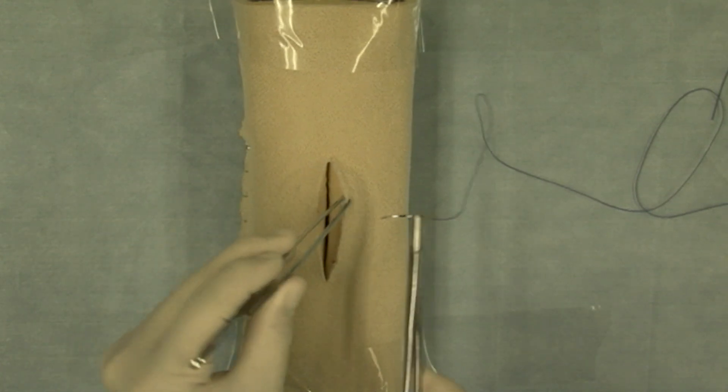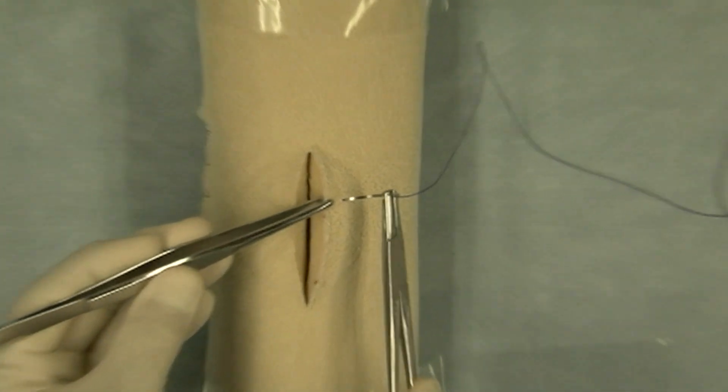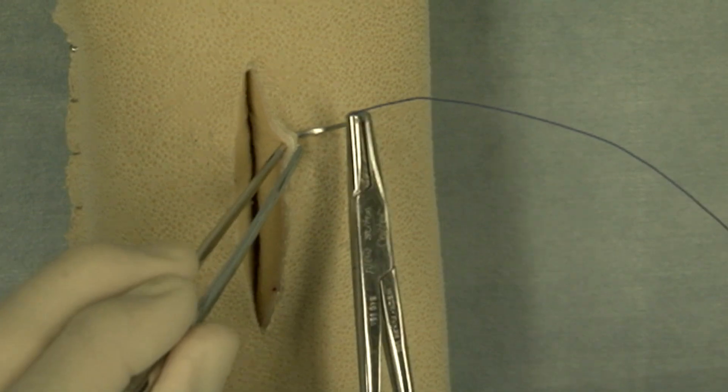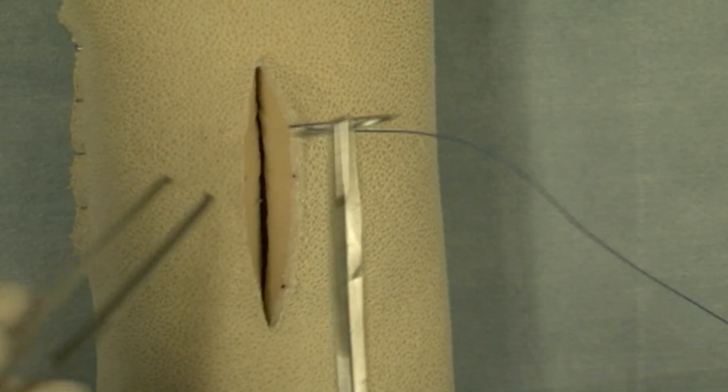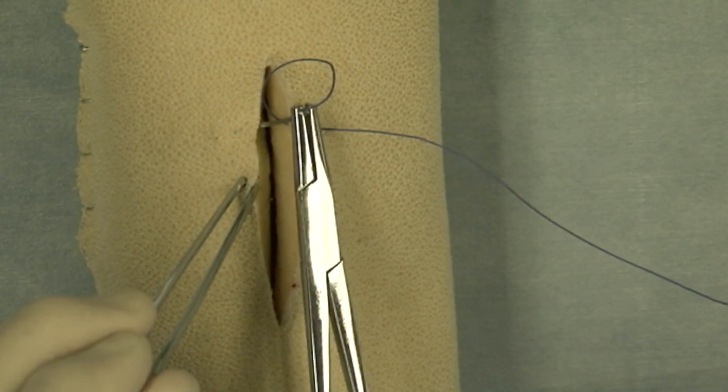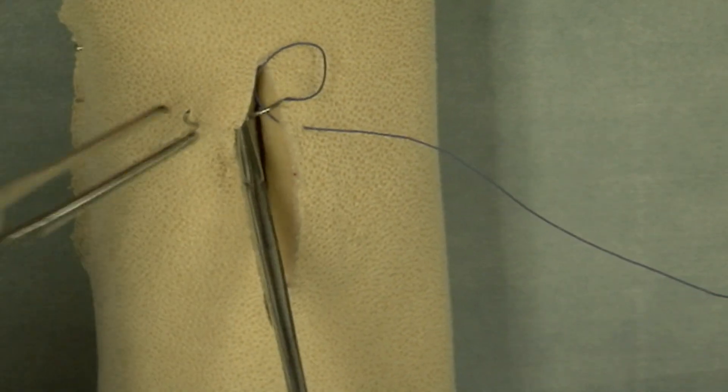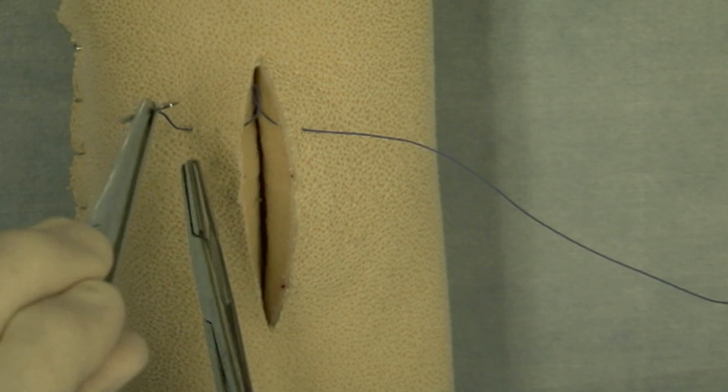I'm going to grasp the near portion of the skin. This is the near bite on the near side. This is the far, meaning far from the incision on the far side of the incision.